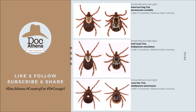Next is the Gulf Coast tick or Amblyomma maculatum. The female on the left shows a white marking covering about 30% of its dorsal part, and the male on the right has spider-like markings on its back or dorsal part. Lastly, the Lone Star tick or Amblyomma americanum: the female has a large white marking in the middle of its back, whereas the male has four markings on the lower part of its dorsal body.